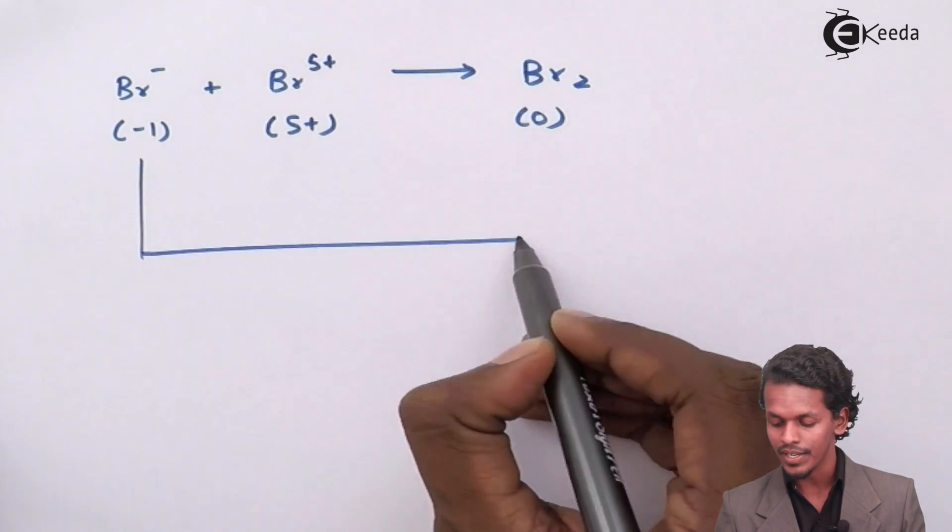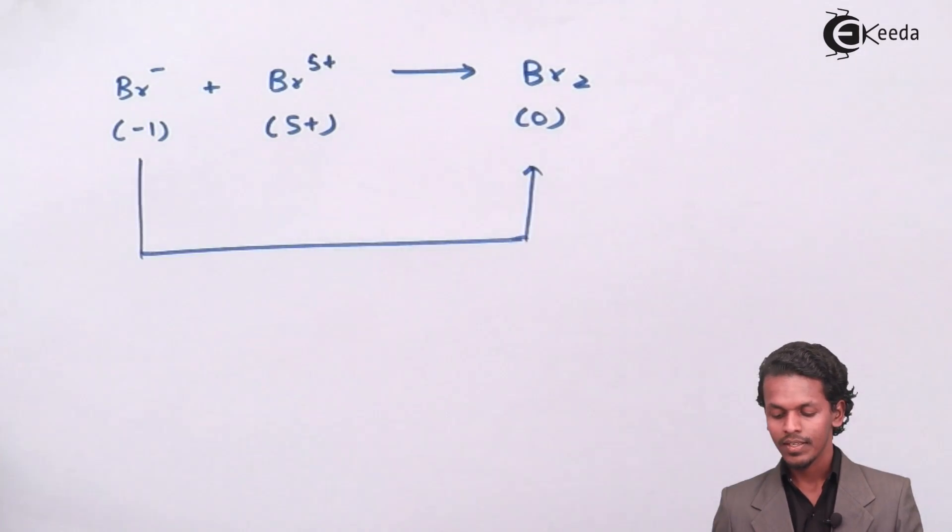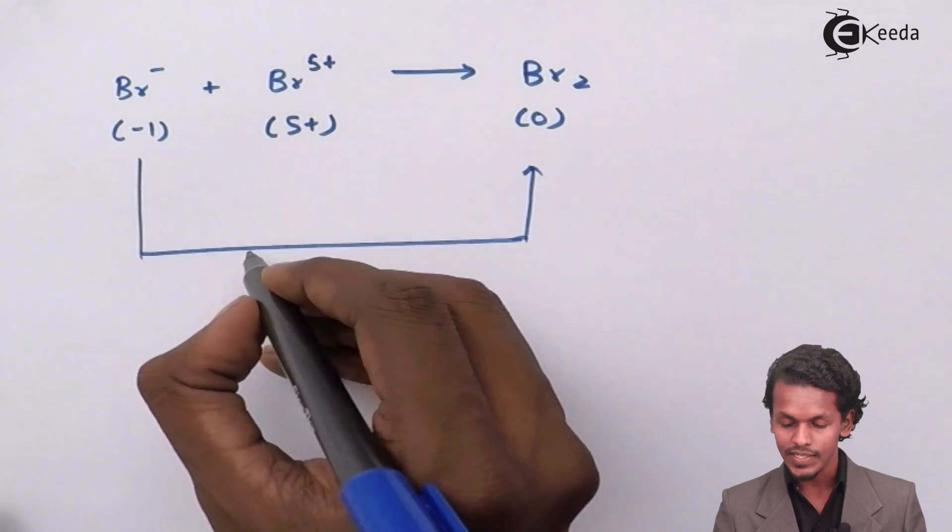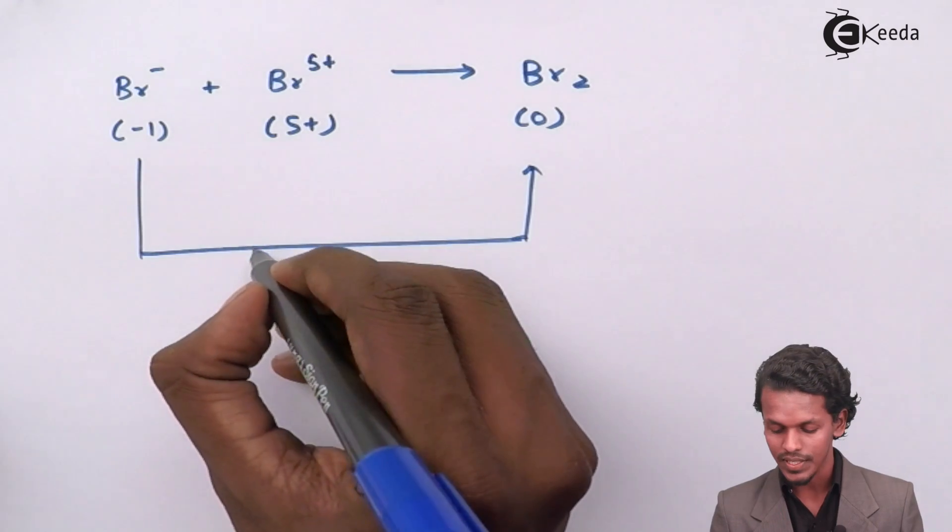In this case, minus 1 is converted into zero. This happens when an electron is lost by that particular atom or ion. Hence, this process in which the electron has been lost is known as oxidation.